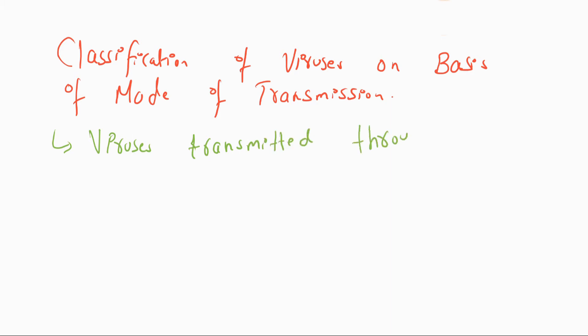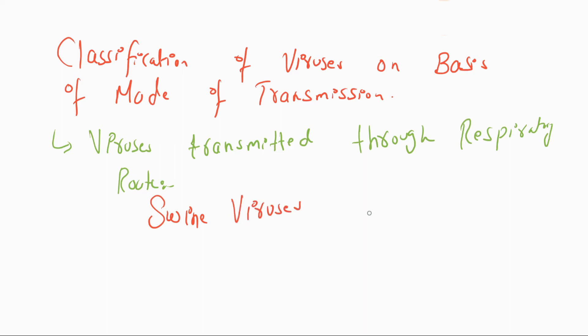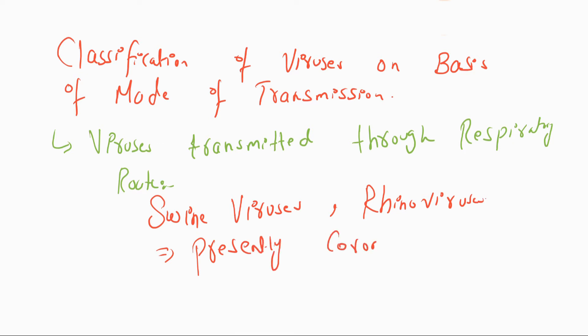The first category: viruses transmitted through the respiratory route — through the nose, throat, and nostrils. Viruses transmitted by this route include swine viruses, which cause swine flu, rhinoviruses, and nowadays coronaviruses, which are also transmitted by the respiratory route.